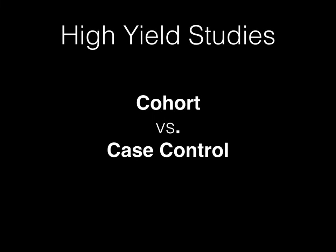The highest yield bit of information within the biostats and behavioral science section is the difference between a cohort study and a case control study. If you've done any question banks at all, you're already familiar with just how high yield this is. Knowing the subtle differences between these two studies could be the difference between a 228 and a 234 — it'll definitely move you from one echelon of score into the next, so understanding these topics is free points you cannot afford to miss.